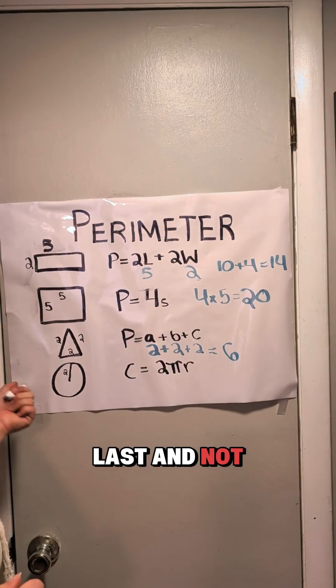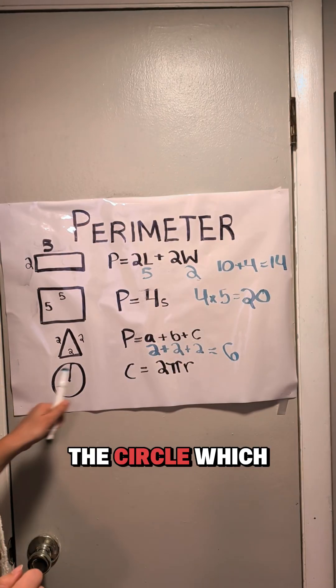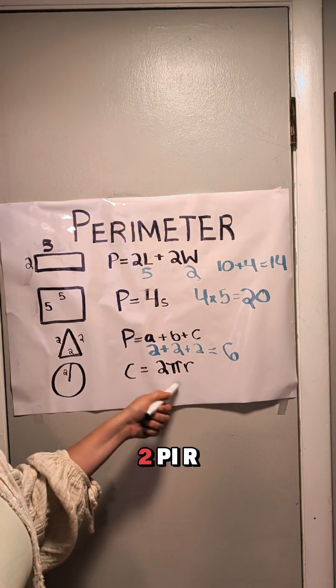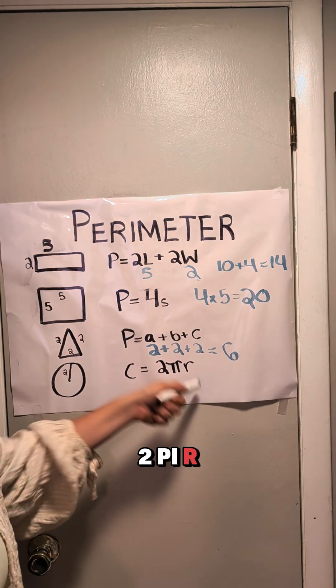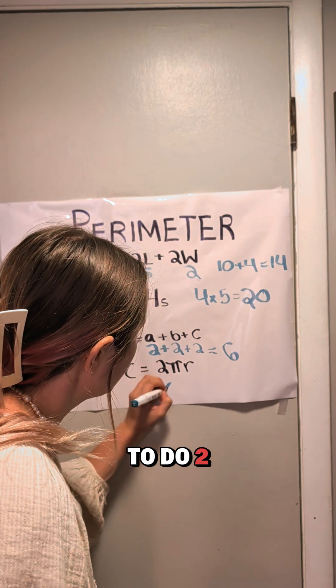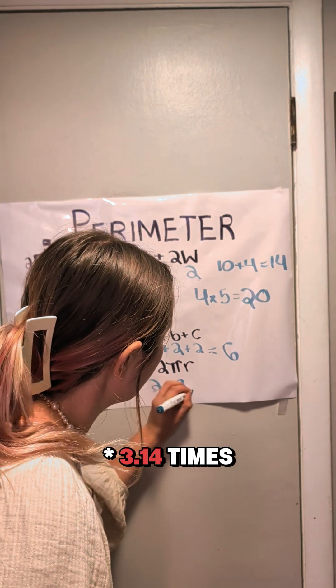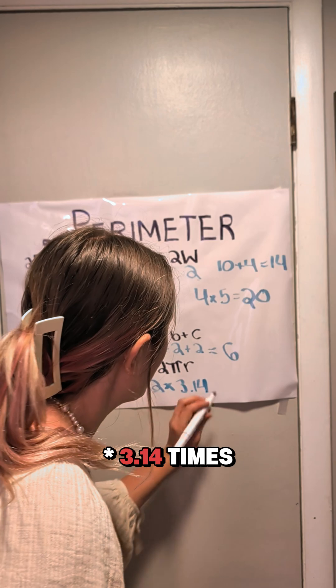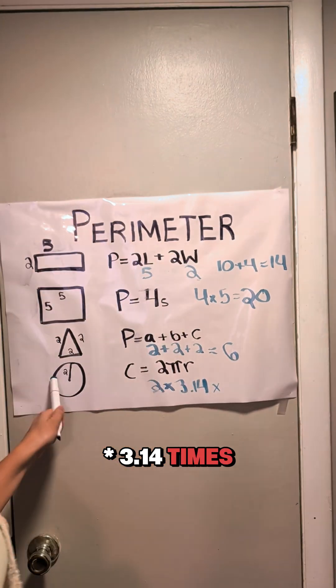Okay, last and not least, the circle, which is C equals 2 pi R. Okay, so we're going to do 2 times 3.14 times 2.